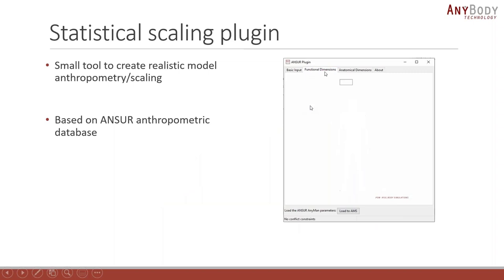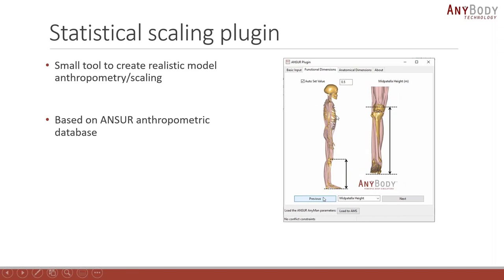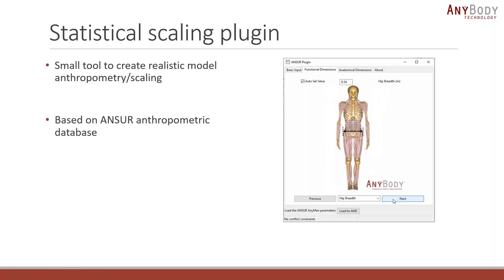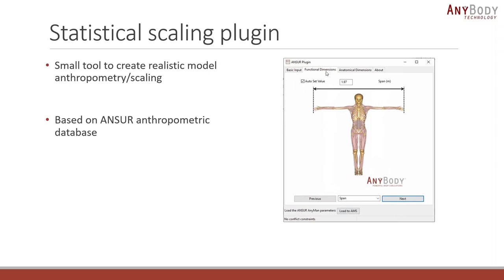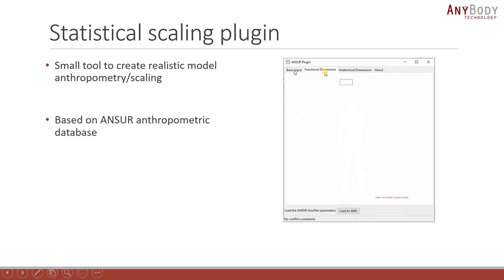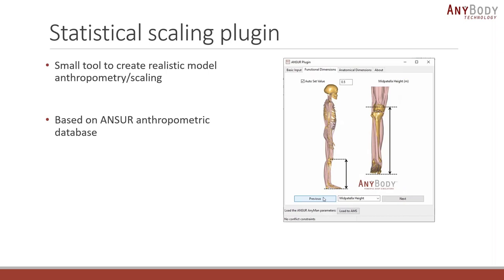The tool has all of the functional dimensions also in the original ANSUR database, and you can go in and set those if you want. Or you can simply set the stature — for example, change it to a really tall person — and if you then look at the functional dimensions, it has recalculated those so you get the average person with that height constraint applied. That's the purpose of the tool.